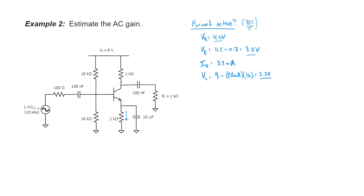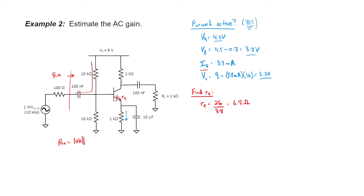Because the emitter is given an AC short through this large 10 microfarad capacitor, I need to know what little r sub e is. It's estimated by taking 26 divided by my emitter current expressed in milliamps — here, that's 6.8 ohms. My input impedance is 10 kilohms in parallel with 10 kilohms in parallel with my emitter resistance reflected over to my base. That's a pretty small number relative to 10 kilohms, so in this problem using impedance reflection really makes a difference.